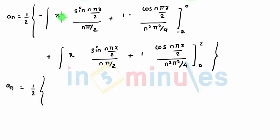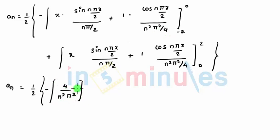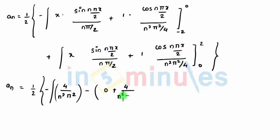That gives aₙ equal to 1/2. When we put 0 in the upper limit, the first term becomes 0 because sine(0) = 0, and the second term: with the minus outside, the first term is 0, cos(0) = 1, so that gives 4/(n²π²). For the lower limit −2: sine(nπ) = 0, and cos(nπ). Note that cos(−nπ) = cos(nπ), so we can just write cos(nπ).